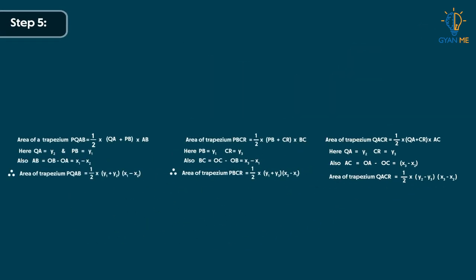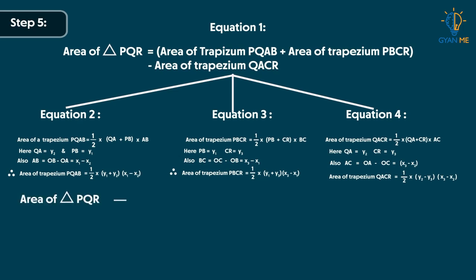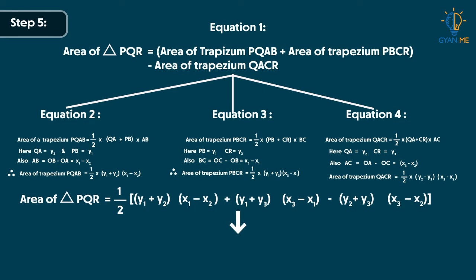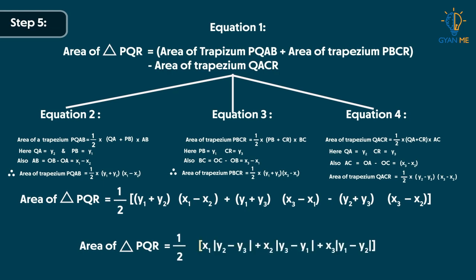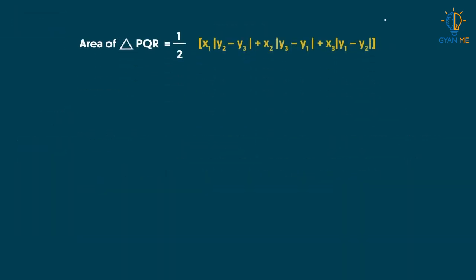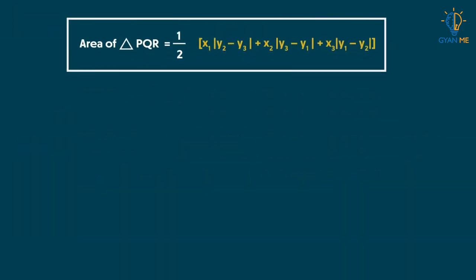Step 5: Substituting equations 2, 3, and 4 into equation 1, we get: area of triangle PQR = ½ × [(y₁ + y₂)(x₁ − x₂) + (y₁ + y₃)(x₃ − x₁) − (y₂ + y₃)(x₃ − x₂)]. On simplification, this gives: area of triangle PQR = ½ × |x₁(y₂ − y₃) + x₂(y₃ − y₁) + x₃(y₁ − y₂)|. This is the formula to find the area of a triangle when coordinates are given.